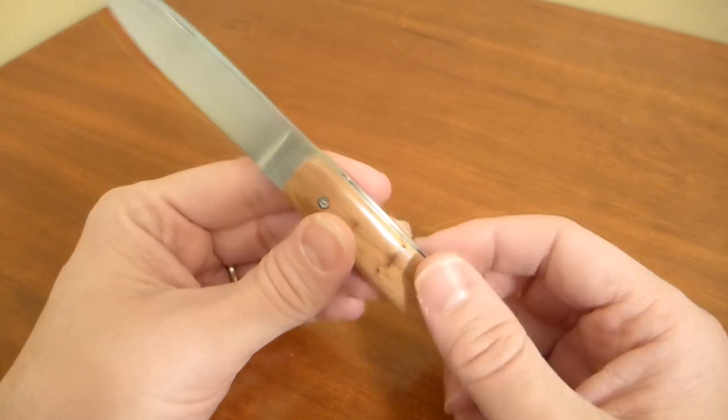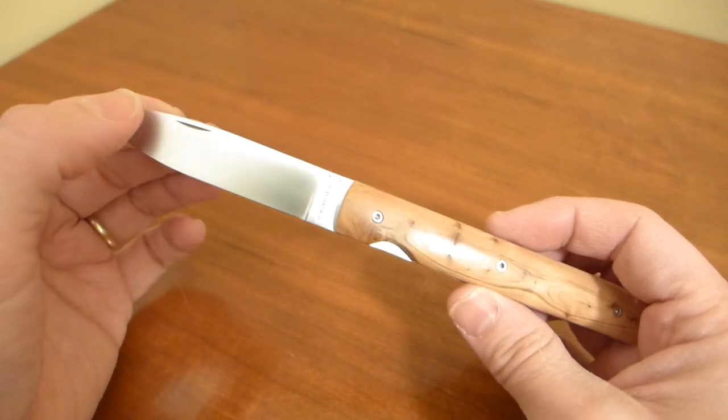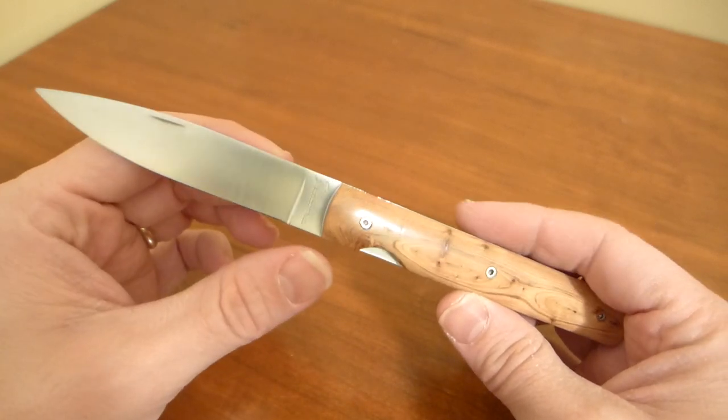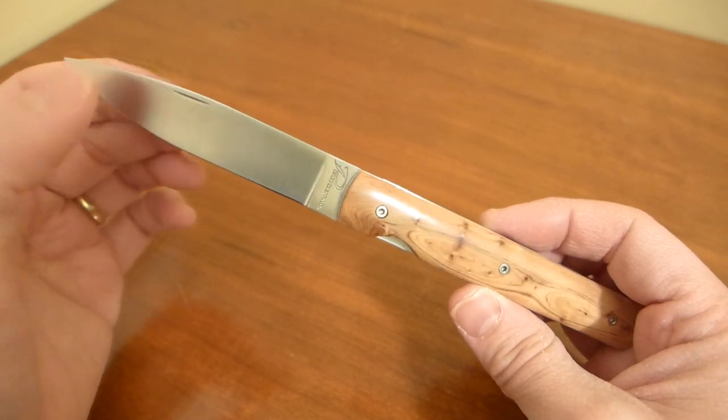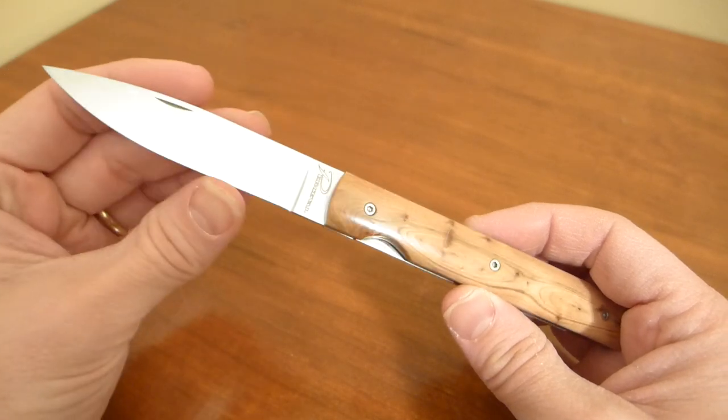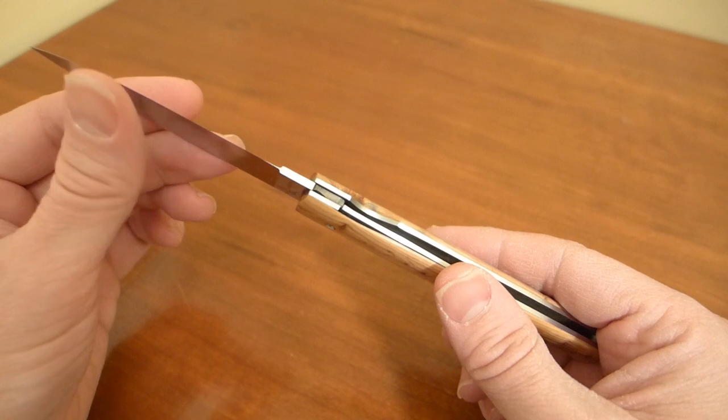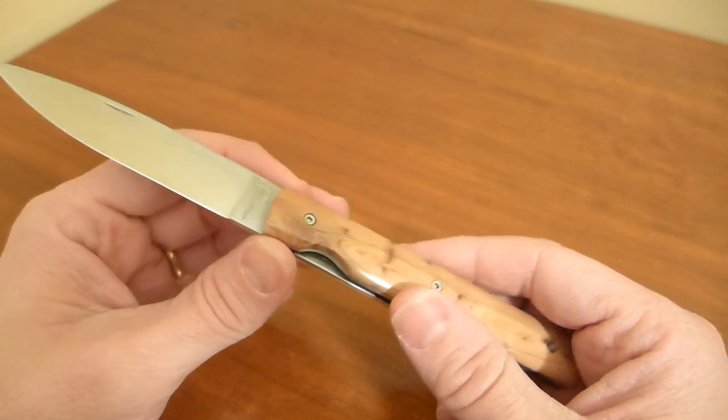This knife here runs 19C27, which is a Sandvik steel. It's a little different than 14C28N, and it is a little different than 13C27. It's a little tougher, it has a little more carbon than those steels, and it's usually used in industrial cutters.